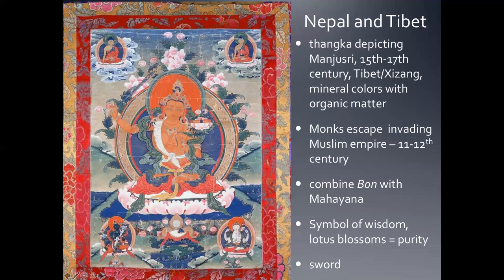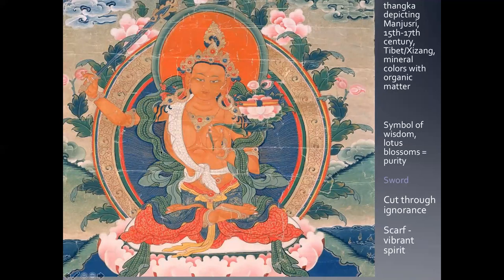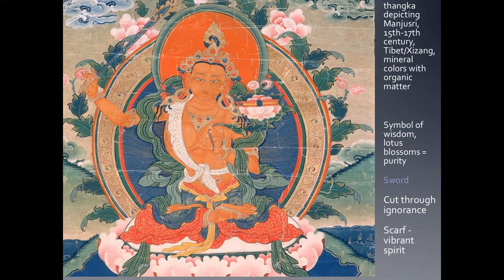In this thangka we see Manjushri holding a lotus blossom — symbolizing purity — and a sword that cuts through whatever is stopping you from reaching enlightenment. Bodhisattvas are portrayed in a typical way, shown as a prince with jewels — good in life but committed to helping others later. The sword cuts through ignorance; the scarf represents a vibrant spirit. Some of these images are inspirational; others show demons, which can place barriers in your way but can also be helpful — there isn't a strict dichotomy in this way of thinking.